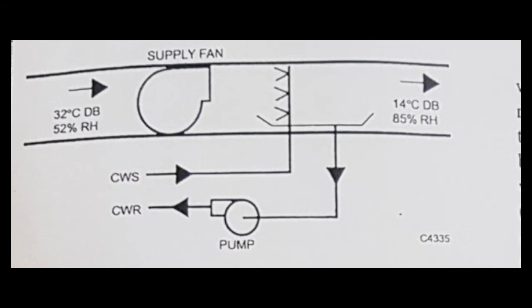The efficiency of the washer is determined by the number and effectiveness of the spray nozzles used and the speed at which the air flows through the system. The longer the air is in contact with the water spray, the more moisture the spray condenses from the air.